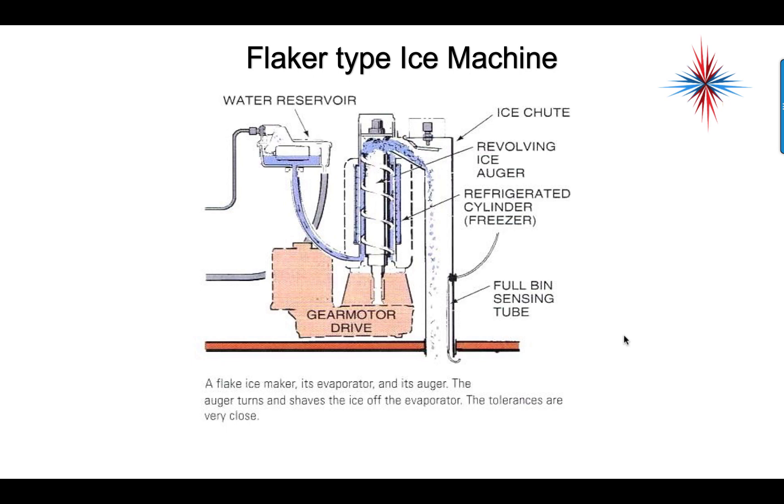Flaker type ice is a different process. We have our evaporator walls, which is the refrigerated cylinder. We feed water in the bottom, and there's an auger that is constantly running. As the water freezes on the walls, it flakes that ice off and shoves it down a chute into the bin. This auger has to be perfectly aligned, or it will destroy the evaporator. The main points of failure are the gears at the top and the bearings at the top and bottom. Once those are done, the ice machine needs to be replaced.